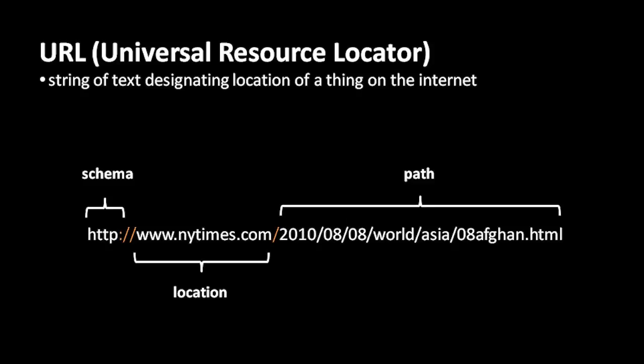For example, here's the URL of a web page on the New York Times website. The location is specified by the domain name www.nytimes.com, which is owned by the New York Times and resolves to the IP address of their computer. After the domain name and a slash, you see a long sequence: 2010/08/08/world/asia/08afghan.html — all of that is the path, and it specifies which page at the New York Times this URL designates.